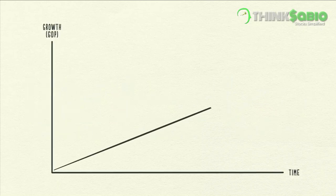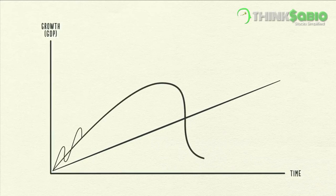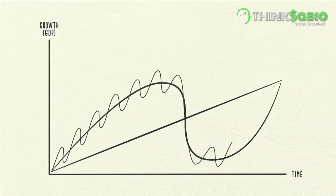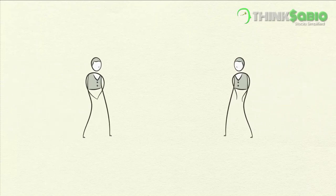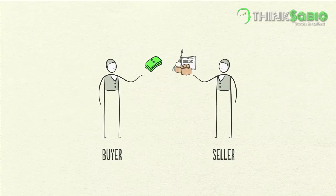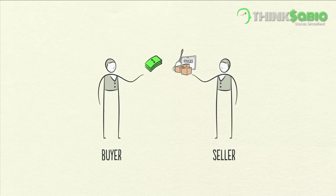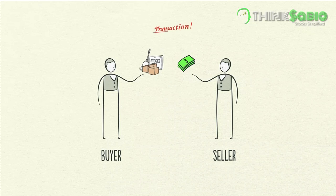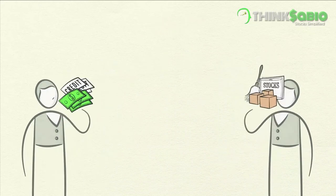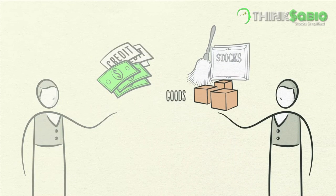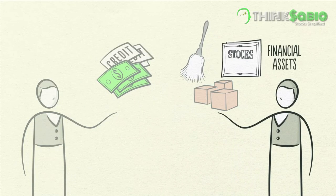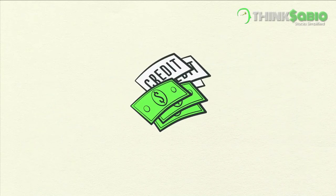We'll look at these three forces and how laying them on top of each other creates a good template for tracking economic movements and figuring out what's happening now. Let's start with the simplest part of the economy: transactions. An economy is simply the sum of the transactions that make it up, and a transaction is a very simple thing. Every time you buy something, you create a transaction. Each transaction consists of a buyer exchanging money or credit with a seller for goods, services, or financial assets.